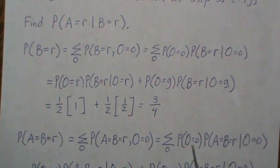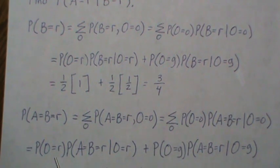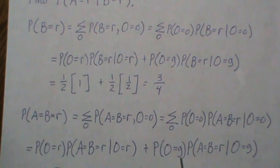Probability of O times probability of A and B, given O. To be very explicit of what we're summing out, we sum over red and green. So O can be red or O could be green.